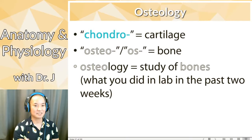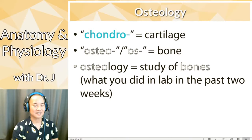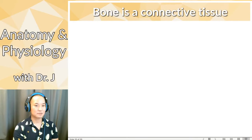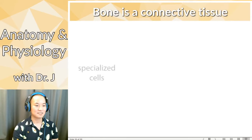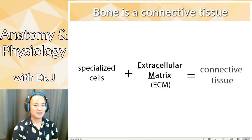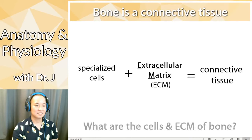If you're taking the labs, that's what you've been doing — osteology, studying the bones. Now bone is a connective tissue. It falls with cartilage; they're both supportive connective tissues. So again, you have the specialized cells and the extracellular matrix that make up a connective tissue.